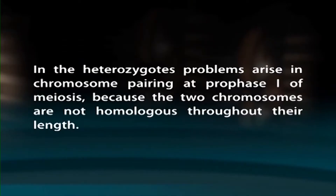An individual homozygous for a rearrangement carries the rearrangement on both homologous chromosomes, and an individual heterozygous for a rearrangement has one unmutated chromosome and one chromosome with the rearrangement. In the heterozygotes, problems arise in chromosome pairing at prophase one of meiosis, because the two chromosomes are not homologous throughout their length. The homologous regions will pair and undergo synapsis, which often requires that one or both chromosomes loop and twist so that these regions are able to line up. The appearance of this characteristic loop structure during meiosis is one way to detect duplications.